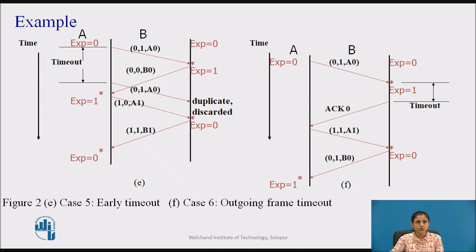Figure 2e shows case 5 with early timeout. Suppose a receiver sends an acknowledgement, but if the sender doesn't receive the acknowledgement within the timeout period, the sender will retransmit the frame, creating duplication at the receiver. The receiver will discard the duplicate. Early timeout will cause a loss of bandwidth.